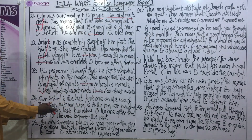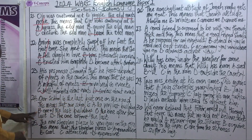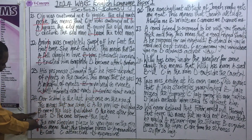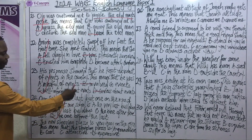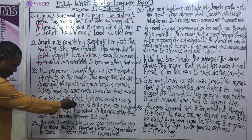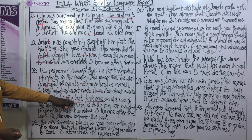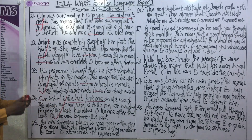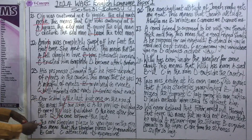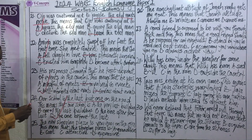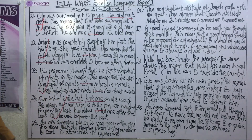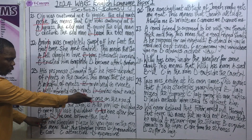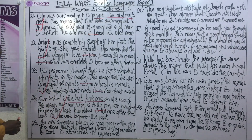Question 24: Our school is the last but one on the road. This means our school is: A) the very last building, B) one of the last buildings, C) the one after the last, D) the one before the last. The correct answer is D — the one before the last. 'Last but one' is a British idiomatic expression meaning second to the last. Option C can be eliminated since there cannot logically be something after the very last.